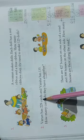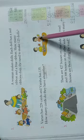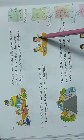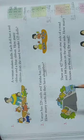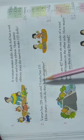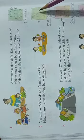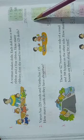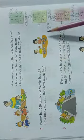Varun has 229 cards. And Varsha has 135. This girl is named Varsha. She has 135. How many cards do they have all together? See the word all together. So together how many do they have? 229 Varun has and 135 Varsha has. If we're going to add both of these numbers, we can get the total number of cards.